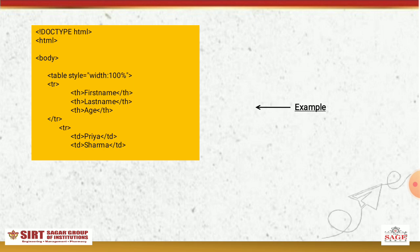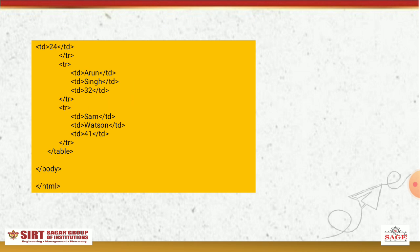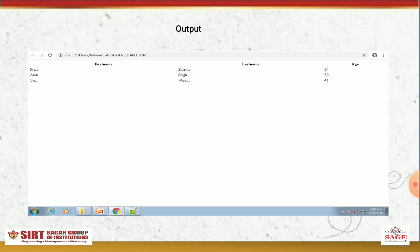We continue with a tr tag using td elements: Priya, Sharma, 24. Another row follows with additional data. The HTML and body sections are then closed. This is our output.